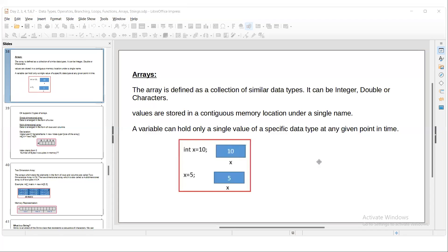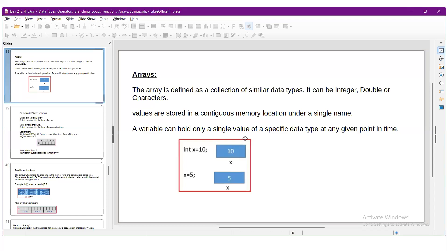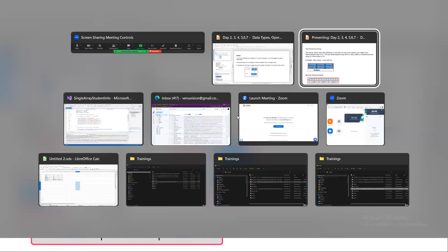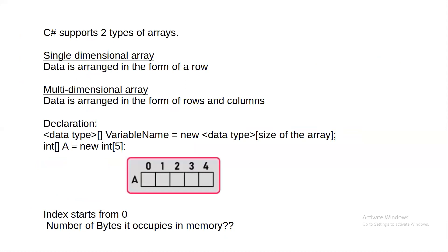Using only one variable name you can access multiple data elements — this is possible with the concept of indexes. We can use the index, and when the size of the array is five, the index starts with zero. If you want to access the first element you refer to index zero; likewise to access the last, the fifth element, you refer to index four.